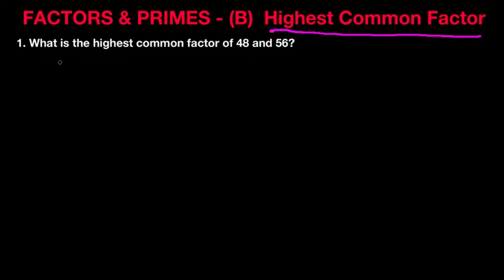Let's start with the number 48. 48 is divisible by 2. Remember, we always start with the smallest prime number. So 48 divided by 2 gives us 24, and we have our first prime factor of the number 48.